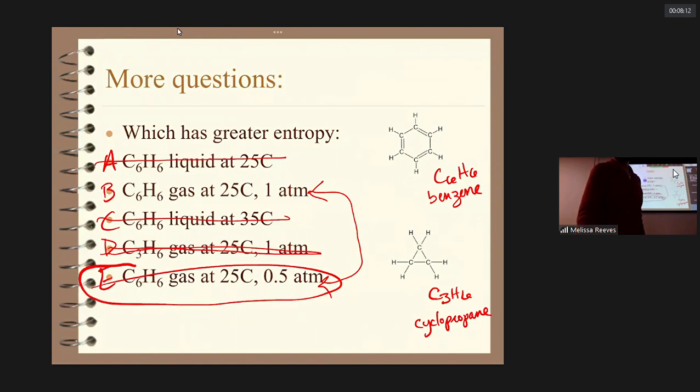So that's the right answer. I got a bigger bite on letter B. Nobody picked A or D, so that's good. Somebody likes the liquid at 35 Celsius. I admit that's a little bit attractive because of the higher temperature, but the fact that it's a liquid is more important here. The answer comes out to be E because it is the complex gas at lower pressure.